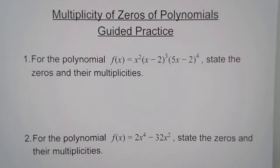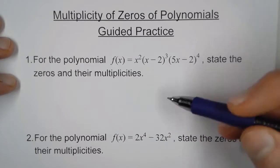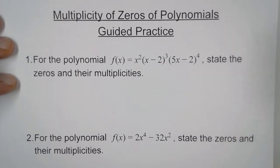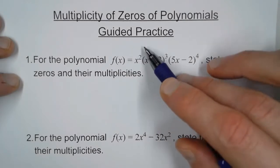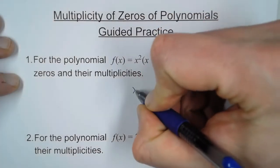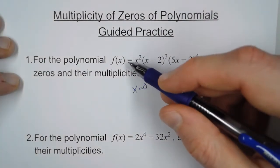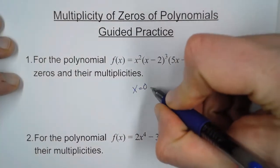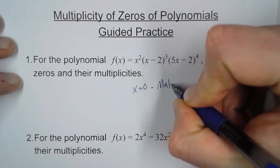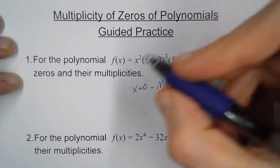So when we talk about multiplicity, what that means is we talk about how often a zero repeats itself. Now how do we know what that is? Well let's look at number one. What makes this zero? That's going to be x equals zero. But because it's squared, it's really x times x, so it actually shows up twice. So what we say is this has a multiplicity of two, because that's how often it repeats.